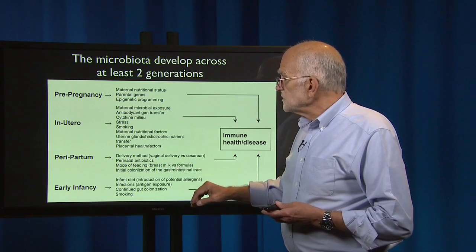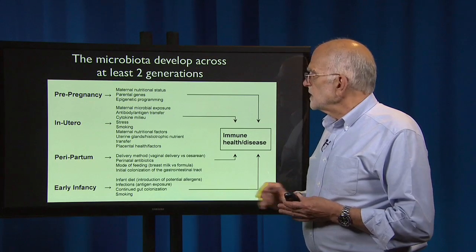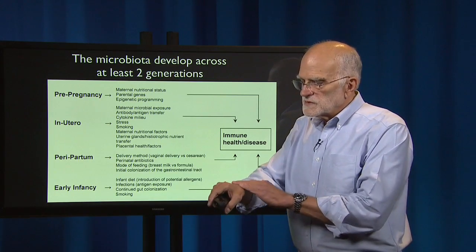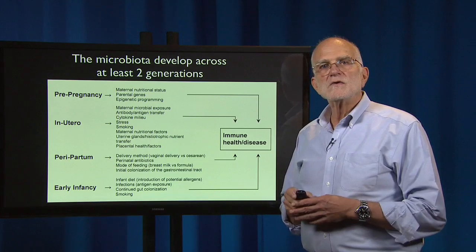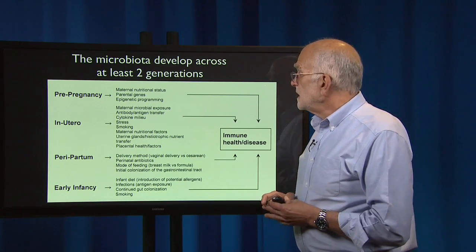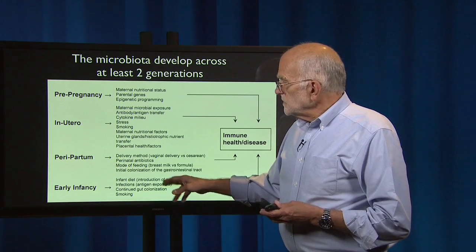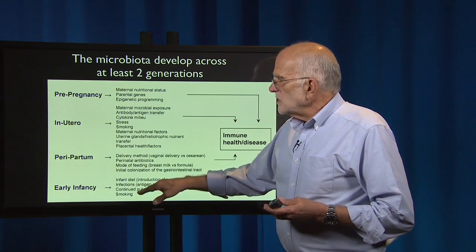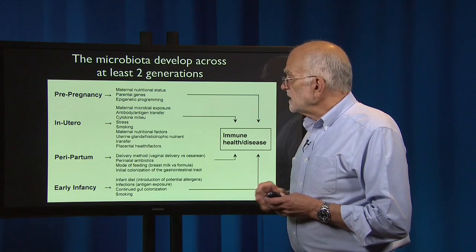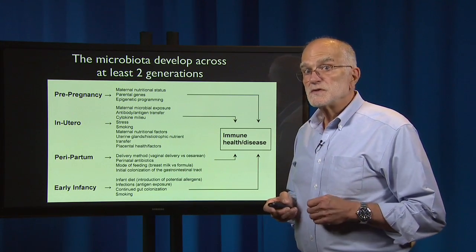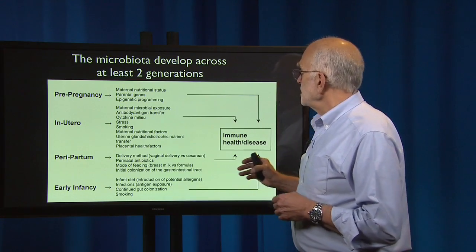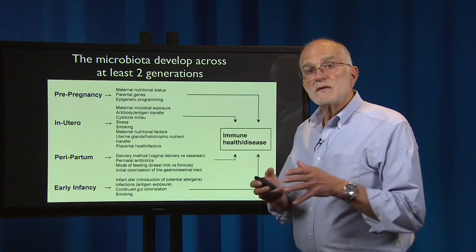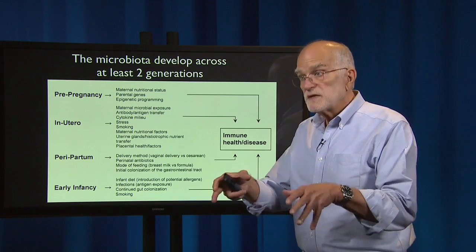The mode of feeding — breast milk versus formula — and the initial colonization of the gastrointestinal tract also matter. Children born by cesarean have a gut community more similar to their mother's skin, whereas those born vaginally have a gut community more similar to their mother's gut. In early infancy, the infant diet, including introduction of potential allergens and infections, will also cause shifts in the microbiota. Exposure to smoke in the environment will also influence this. These all combine to determine the state of the immune system and the infant's ability to manage its own microbiota.